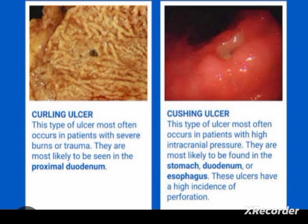The next point to remember is the location. The Curling ulcer is commonly located in the proximal duodenum. Cushing ulcers are seen in the esophagus, stomach, and duodenum. The most common complication of perforation is seen in Cushing ulcers.